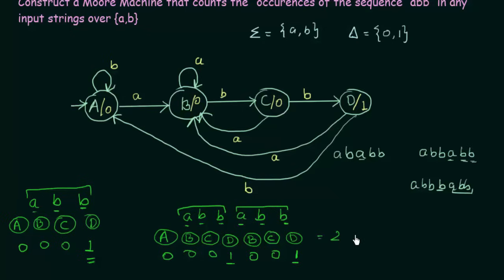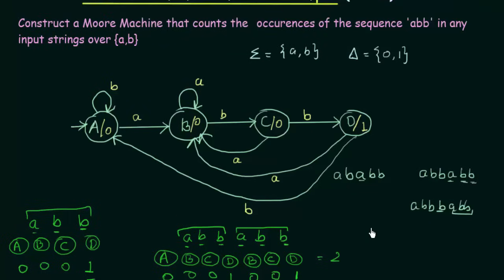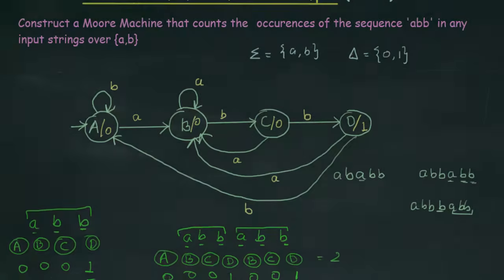So we are able to count the occurrences of the sequence ABB in any input strings over A, B. This is the Moore Machine we have designed for that purpose. I hope this was clear to you. Thank you for watching, and see you in the next one.